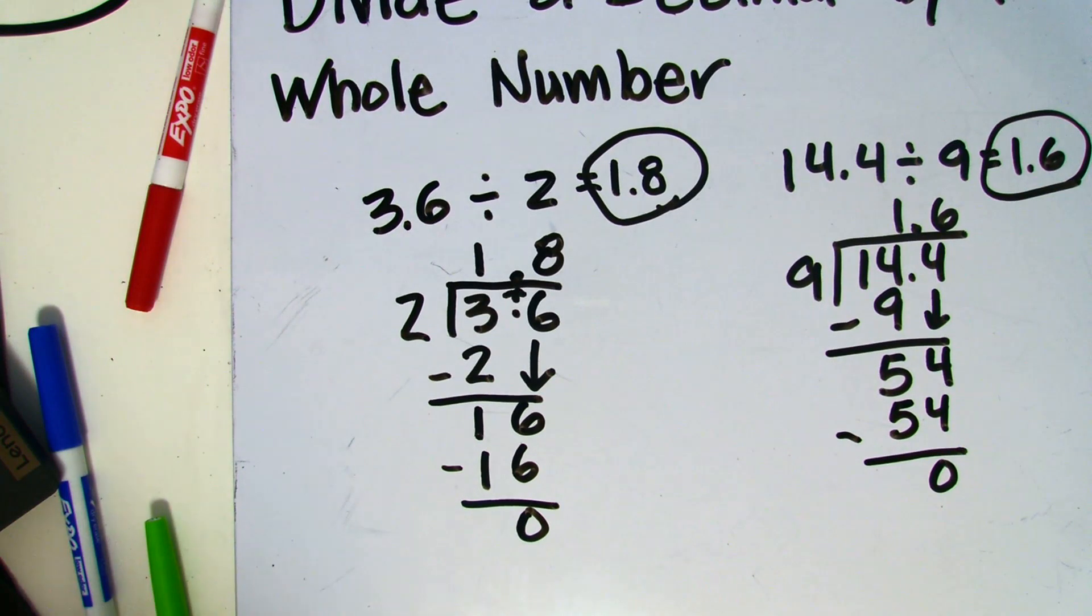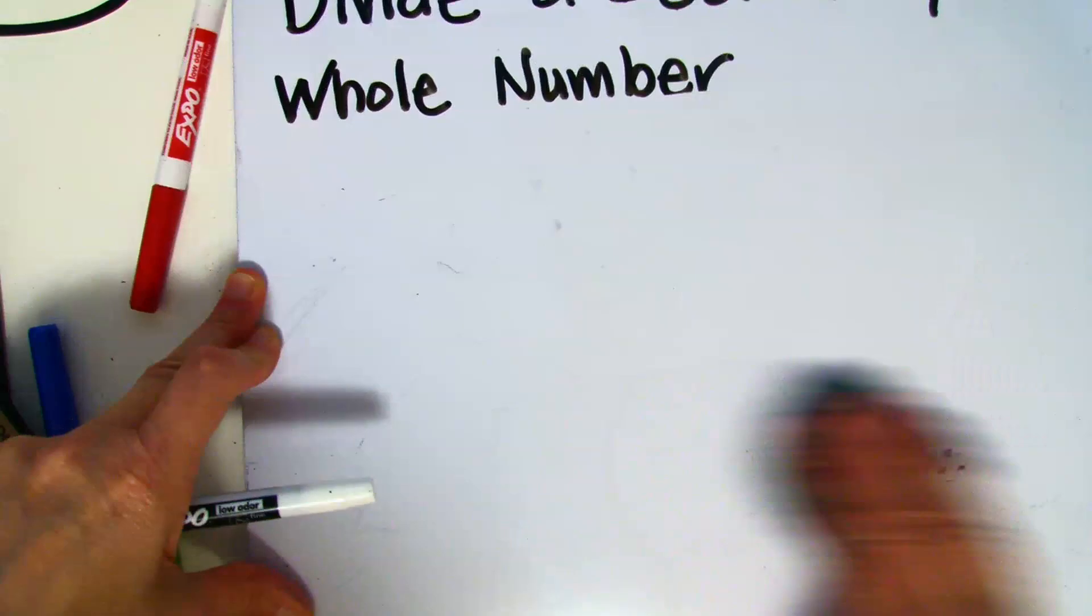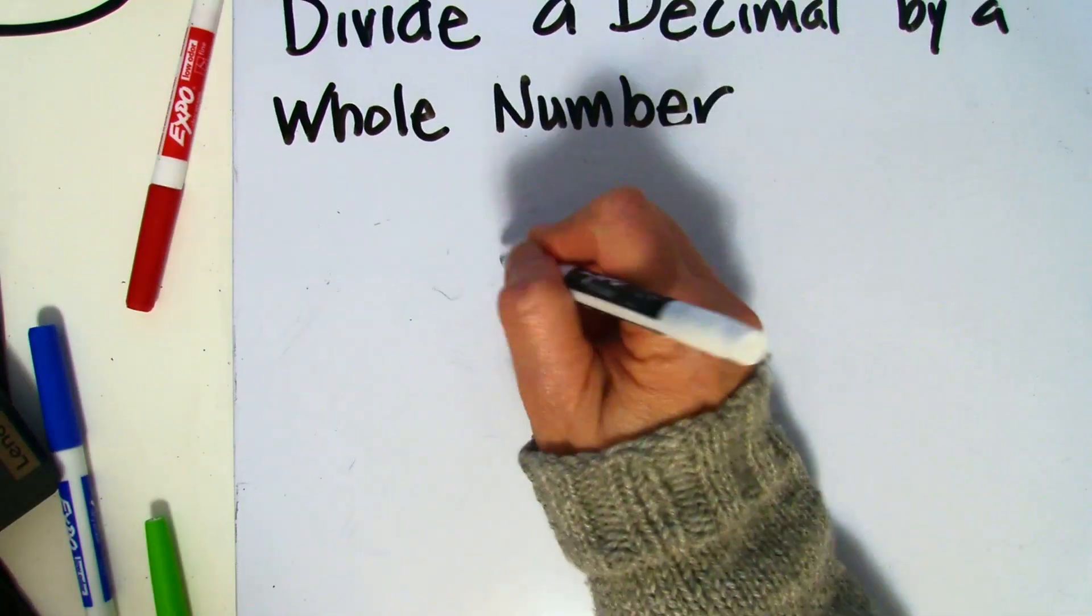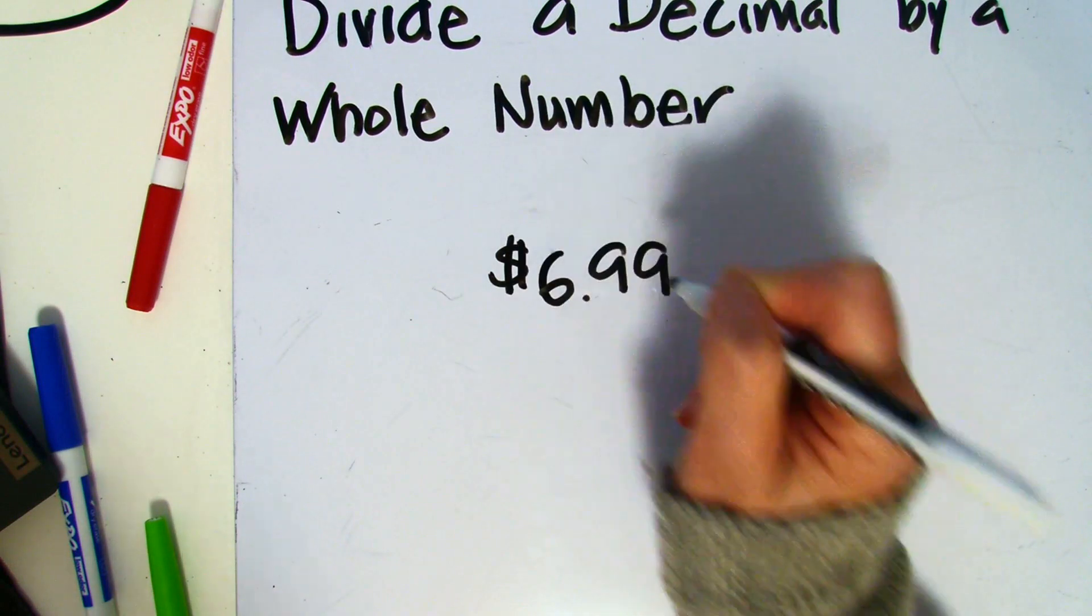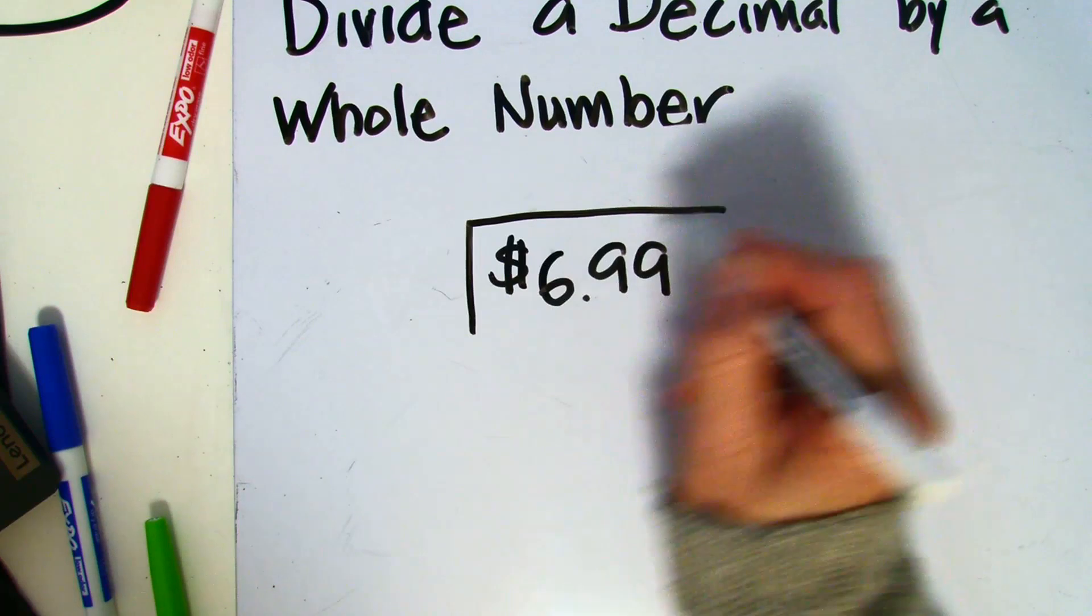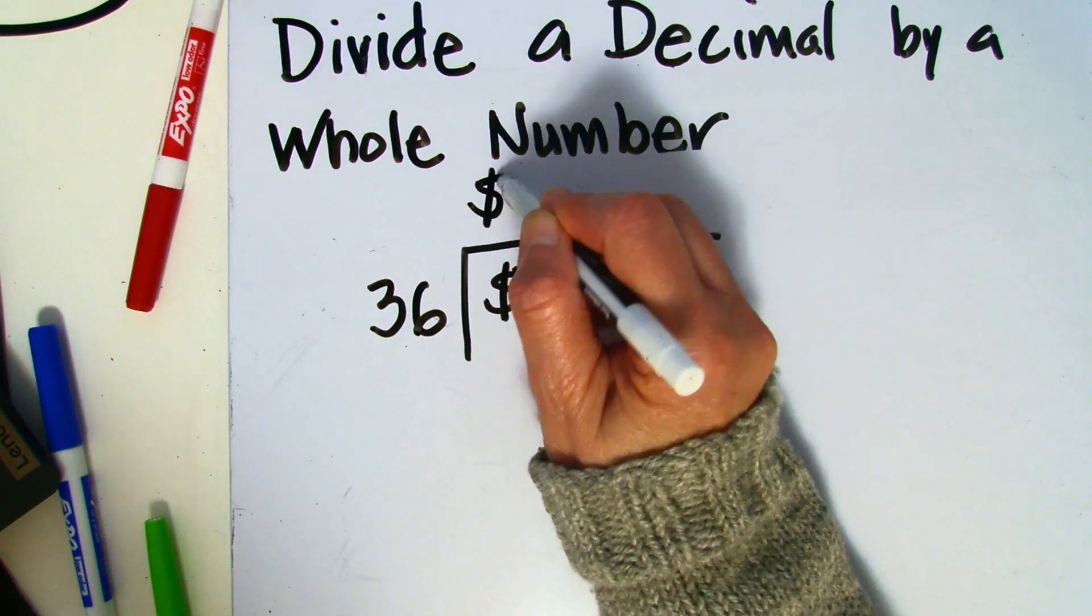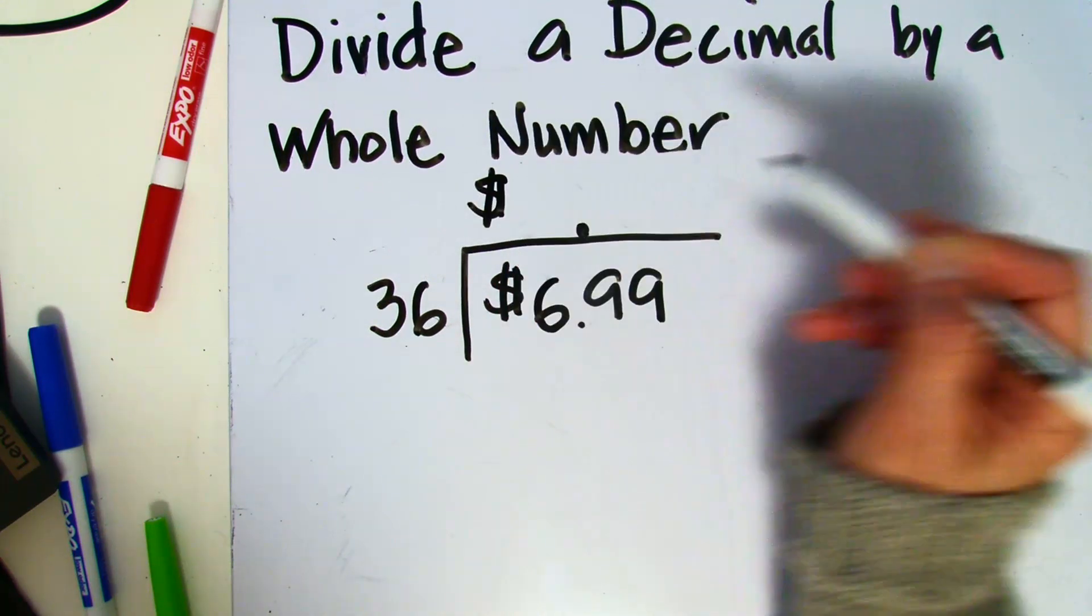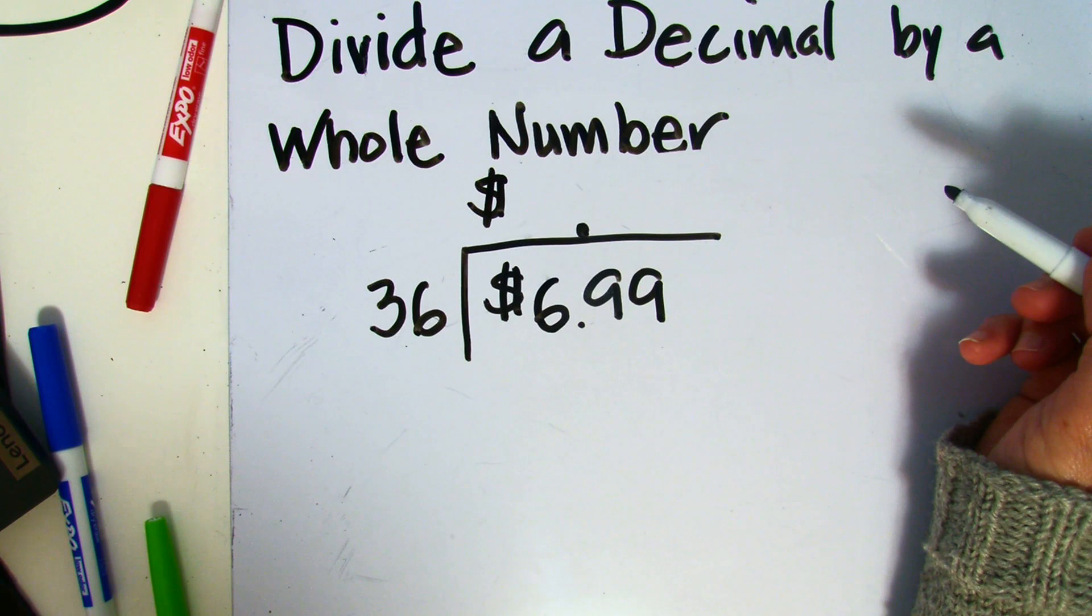Now when we're working with money, sometimes our decimal point will go beyond that hundredths place, so we're going to do a little rounding. Let's do an example. Let's say we have $6.99 and we're going to divide that by 36. So I'm going to go ahead and bring up my dollar sign and my decimal point. Now I'm going to divide, and I'm going to basically ignore that decimal point.